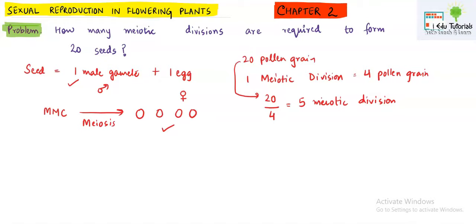Now we will look at the female gamete. Megaspore mother cell also underwent meiosis. Four megaspores were formed out of which three degenerated and only one was functional.